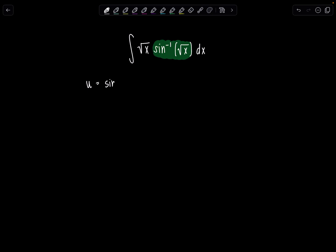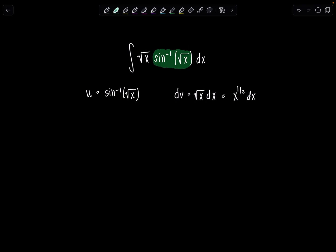So I'm going to let u be sine inverse of rad x, and then dv is rad x dx, which I'm already going to rewrite as x to the one half dx. Thinking ahead, I just want to make life easy when I go find v. Now let me just remind you what the derivative of sine inverse is. I'll use theta so there's no confusion. The derivative of sine inverse of theta is 1 over the square root of 1 minus theta squared.